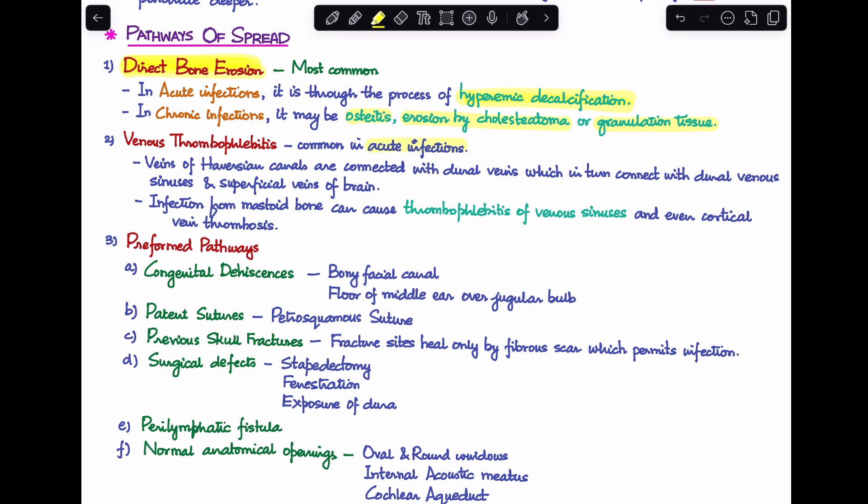Second one is venous thrombophlebitis. Now venous thrombophlebitis is a more common path of spread in case of acute infections. How does this happen? So the veins of Haversian canals are connected with dural veins. These in turn connect with dural venous sinuses and the superficial veins of the brain. So any infection from the mastoid bone can ultimately spread through this pathway to involve the venous sinuses and cause a thrombophlebitis of the venous sinuses.